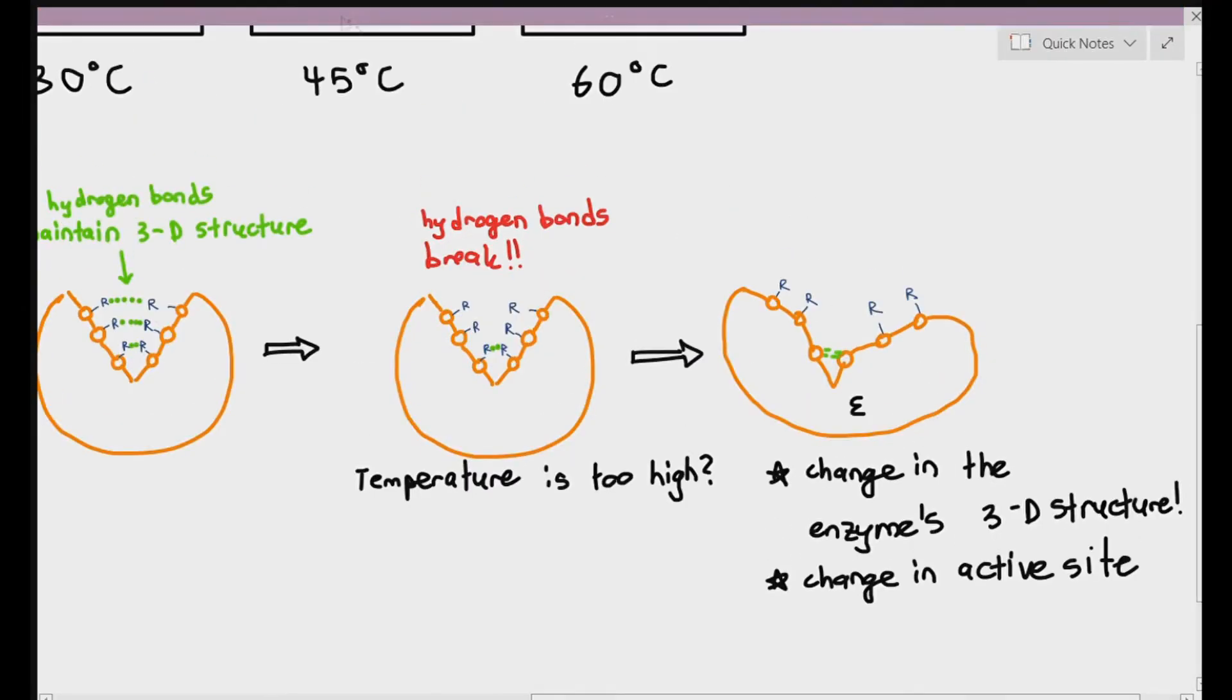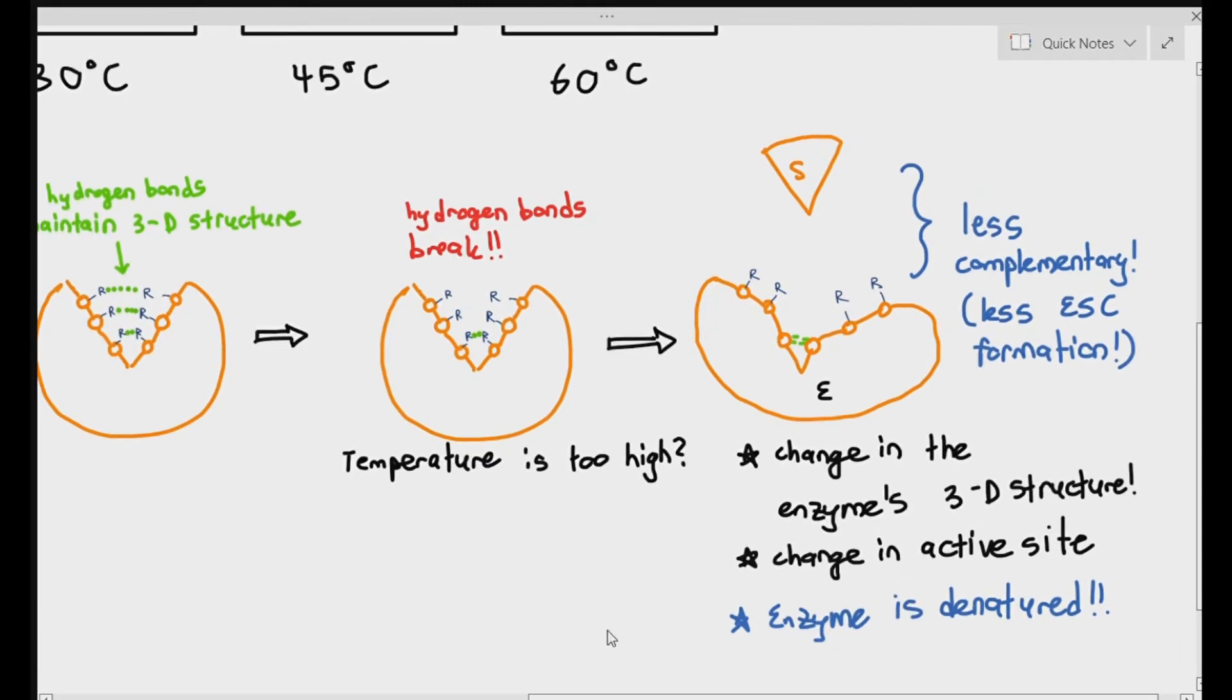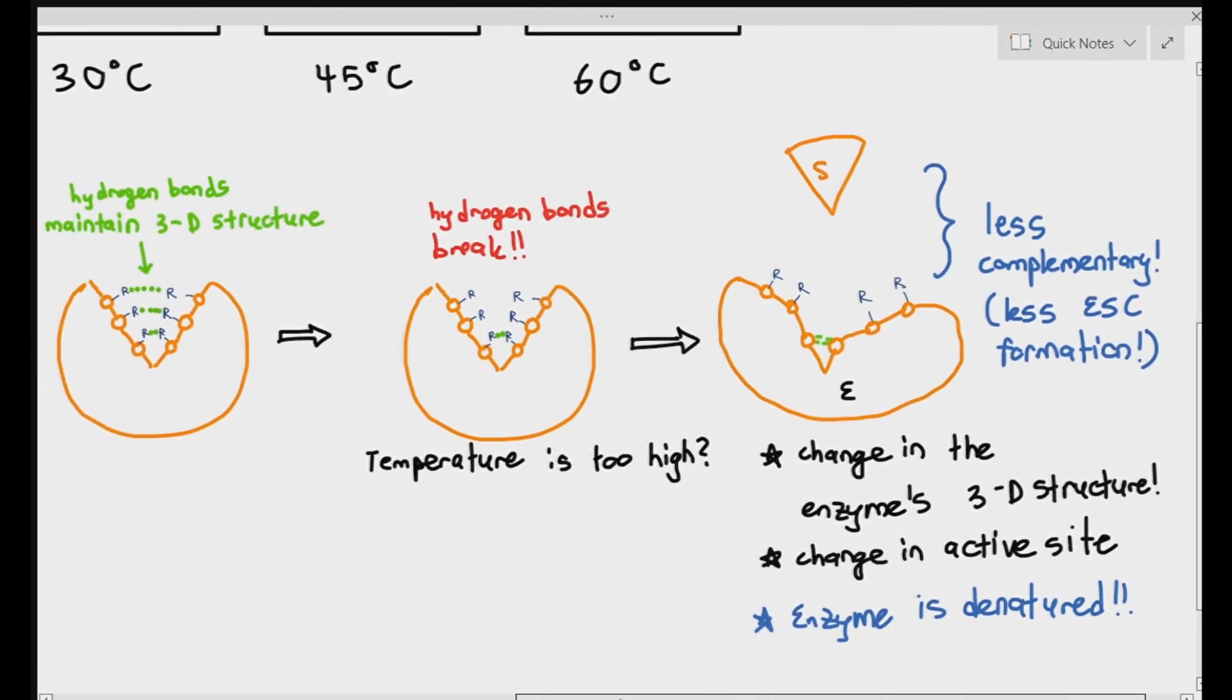Because remember, the hydrogen bonds were supposed to be there to maintain the shape of the active site. But with no more hydrogen bonds to maintain it, the entire 3D structure will change. And when the enzyme's 3D structure actually changes, look at the substrate. Can it actually bind with the enzyme? Now, the shape of the substrate is less complementary to the enzyme. There is a lower chance for an ES complex formation to happen.